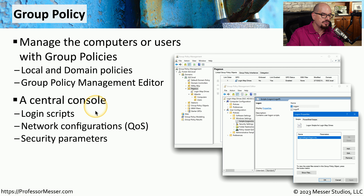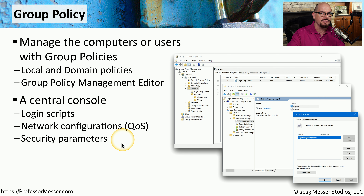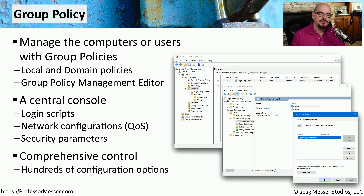Group policy allows us to configure login scripts when a user connects to the network. We can set up network configurations, such as quality of service, and we can set security parameters that all of these devices and users must follow. This combination of Active Directory and group policy allows us to create a comprehensive control mechanism for everything on our network, whether configuring a device or setting security policies for an individual user.